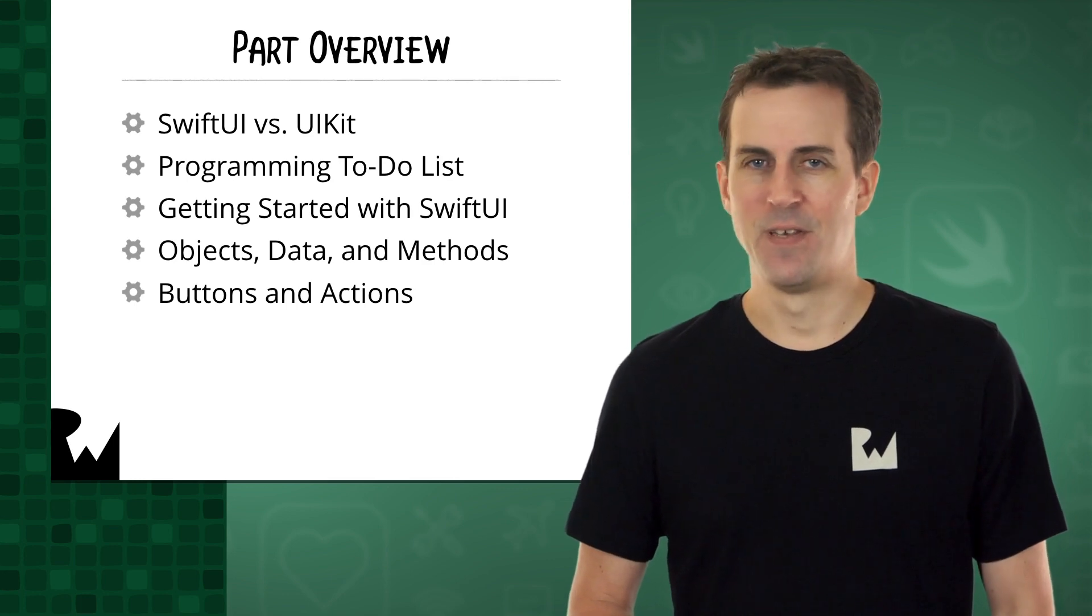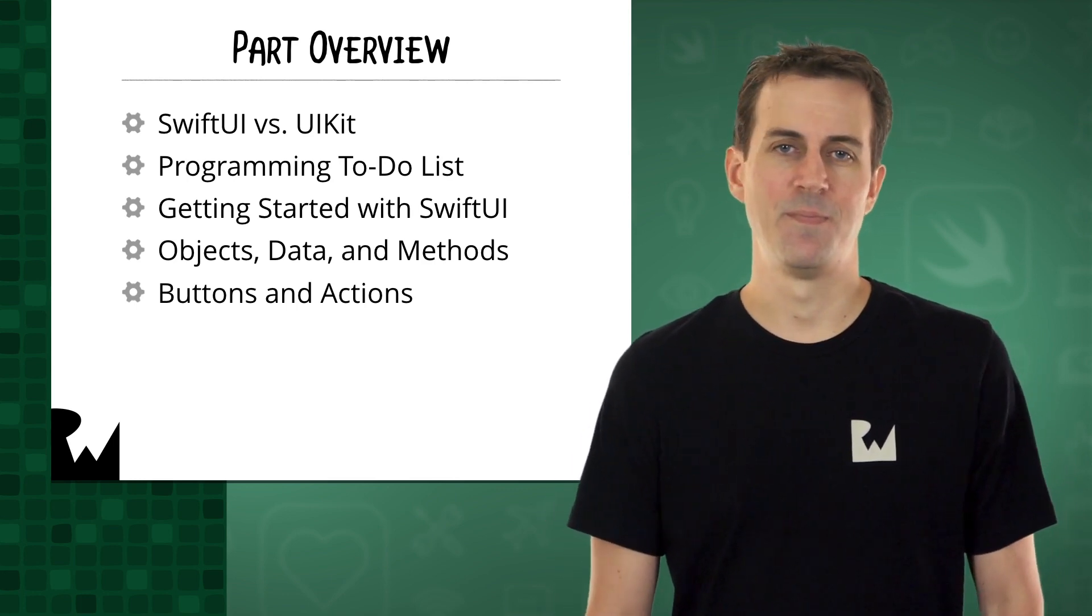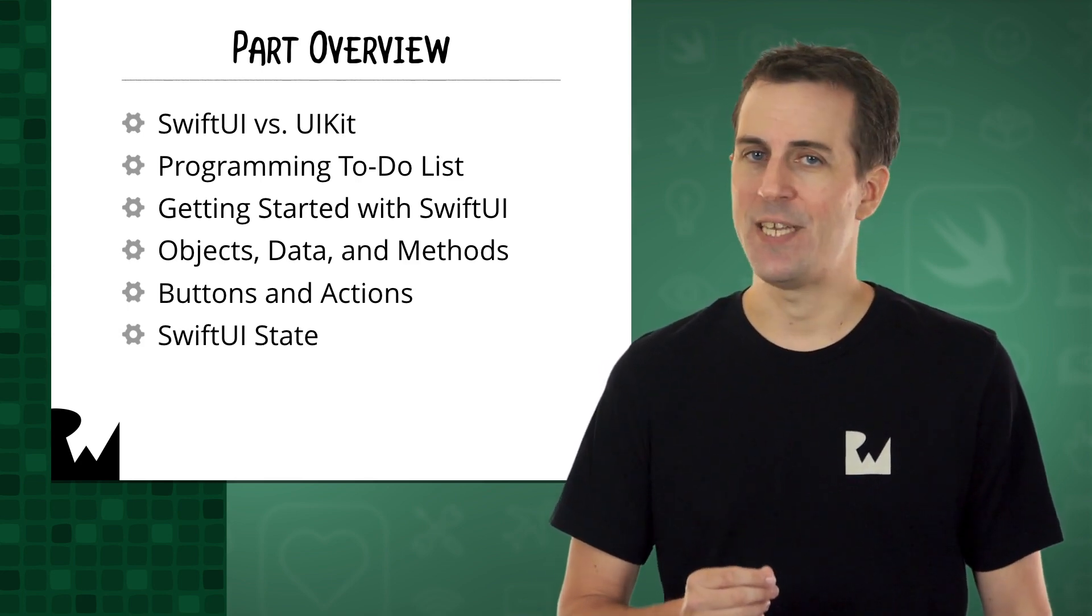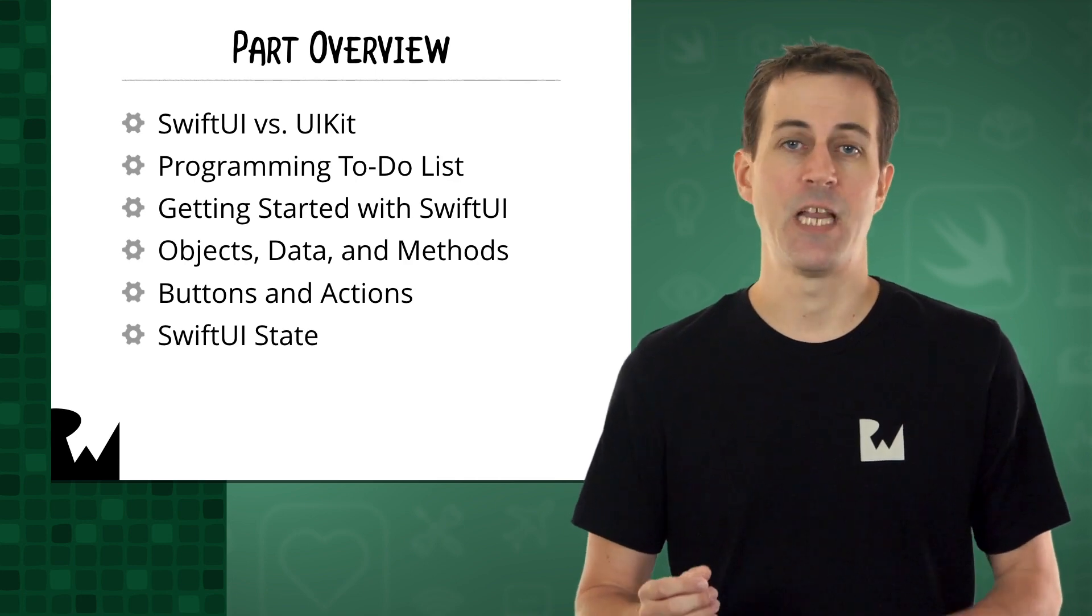Then we'll learn how to make the app interactive, by adding a button to the screen that you can tap to print a message to the console. You'll learn about an important concept called SwiftUI State, and use that to make the button display a pop-up alert instead of a console message.